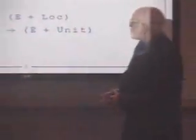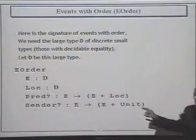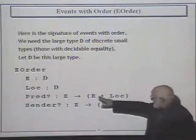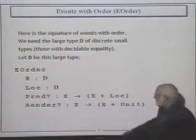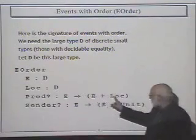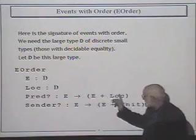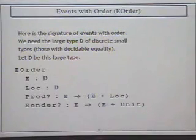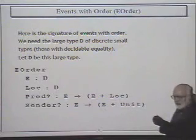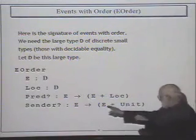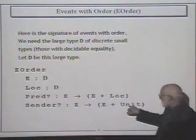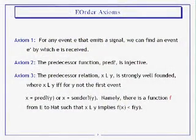The predecessor function tells you what event came before the event you're looking at. It could come before either in the sequential ordering at the location — a prior event in a sequential computation — or it could be the sender of an event. If you make the type of the predecessor general, it maps to the previous event or, if there is no previous event, to the location. That way you get two bits of information: the previous event and the location. Likewise, with the sender you can find out who sent you a message, or tell that there was no sender and this is a first event.